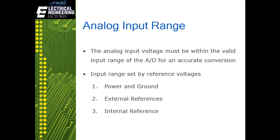The analog-to-digital converter can only perform an accurate conversion if the analog input voltage is within the valid input range. If the input voltage falls outside this range the conversion value will be inaccurate. The input range is set by high and low voltage references, which define the upper and lower limits of valid input voltage. In many cases these references are set to the microcontroller supply voltage of 5 volts and ground or 0 volts. There are also external and internal reference methods.